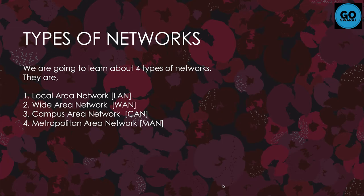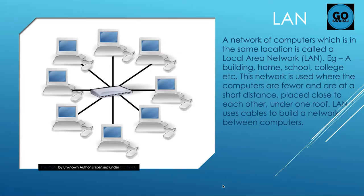We are going to learn about four types of networks: Local Area Network (LAN), Wide Area Network (WAN), Campus Area Network (CAN), and Metropolitan Area Network (MAN). LAN: a network of computers which are in the same location is called a Local Area Network. Examples include a building, home, school, or college.